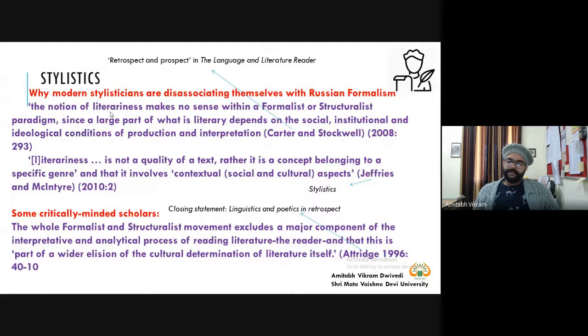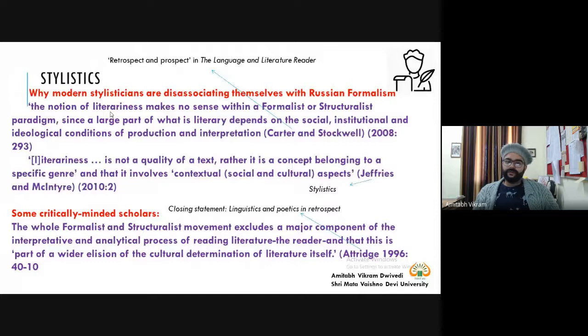Critically minded scholars, including Attridge in the book Closing Statement: Linguistics and Poetics in Retrospect, say that the whole formalist and structuralist movement excludes a major component of the interpretative and analytical process of reading literature. This is a valid charge: when you are too much focused on the literary work or literariness, you are not considering one important component responsible for the interpretation and analysis of that work — the reader.